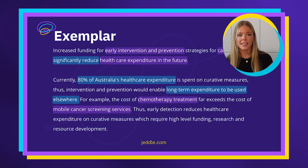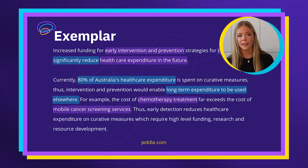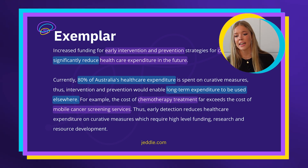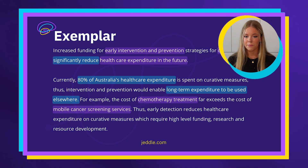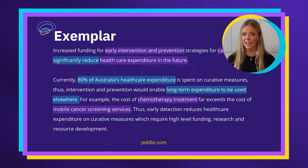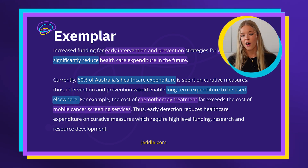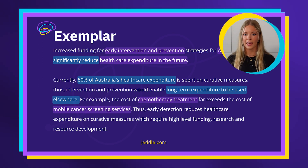To begin my first point I've led with a statistic which clearly shows my analysis from the get-go. I've followed on by saying how this intervention and prevention would affect long-term expenditure, which in this case is enabling the cost to be used elsewhere. I've also included a detailed example relating to cancer — chemotherapy treatment versus the cost of mobile cancer screening.